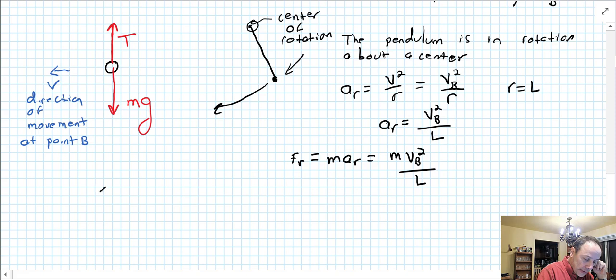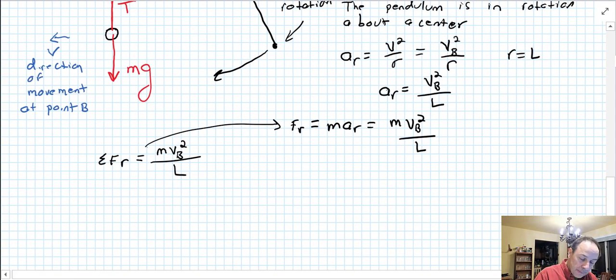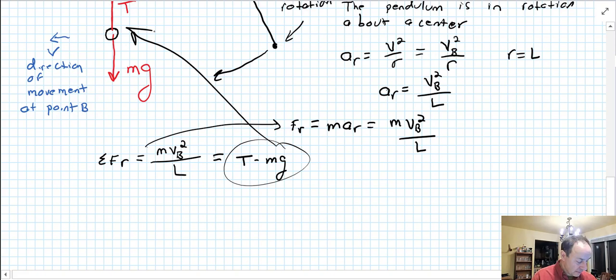Well, now we can work on a force balance. So the sum of the forces in the radial direction, we know that that has to equal m v squared over R, so that's got to equal m v_B squared over L. But that force balance is T in the positive direction minus mg, mg in the negative direction. These are the only two forces acting up here.